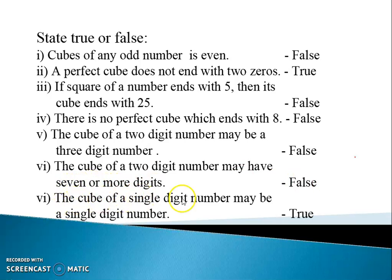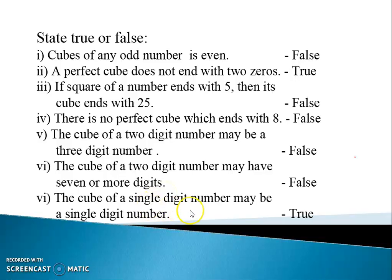The cube of a single-digit number may be a single-digit number — it is true. For example, one cubed is one, two cubed is eight. So the cube of a single-digit number can be a single digit. So students, we have completed this lesson on cubes and cube roots — two exercises. With this, the chapter gets over. Thank you.